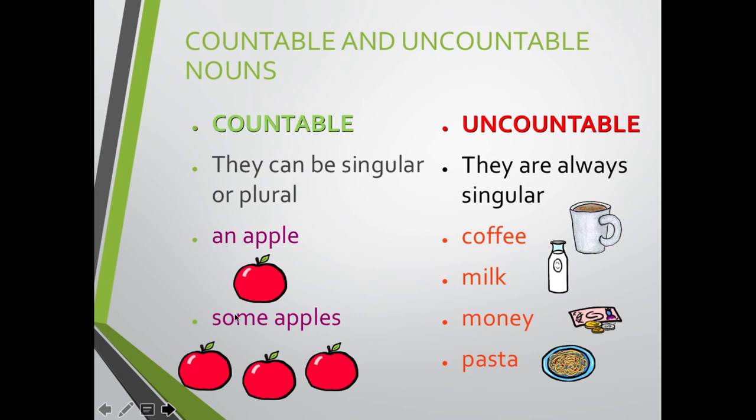Or you can say some apples. Puede ser también plural si le ocupamos distintas palabras para hablar de esas cantidades. ¿Cierto? An apple decimos una manzana o también es correcto decir one apple. Y some apples para decir algunas manzanas en plural. Y para lo que no podemos contar tenemos que tener en cuenta they are always singular. Lo vamos a tomar siempre como singular lo que no podemos contar, ok. Como coffee, milk, money, pasta. Café no lo podemos contar, la leche, el dinero, la pasta no se puede contar, ok.